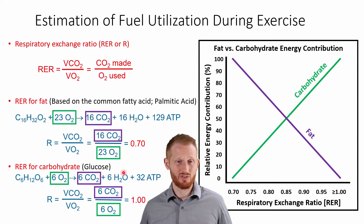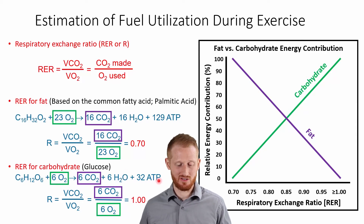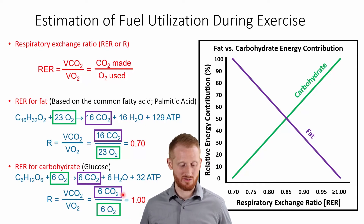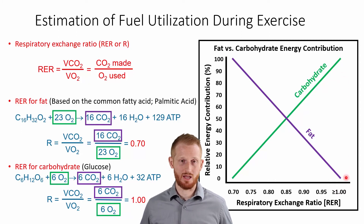If you do the same process for glucose, which is carbohydrate — glucose is C6H12O6 — you have to add six O2 molecules in order to get six CO2 molecules, and we end up with six H2Os and some ATP as energy. Doing that same RER equation: the CO2 produced is six, the O2 consumed is also six — so six divided by six equals one, which is the top end of our scale, where we're using all carbohydrates and essentially no fat to fuel aerobic metabolism.